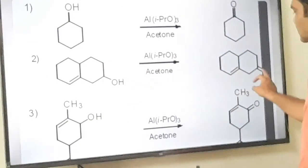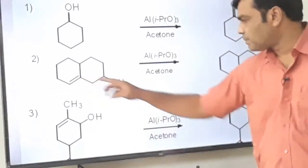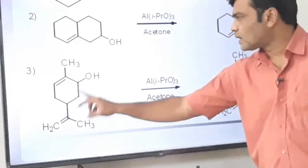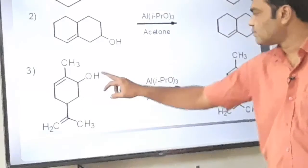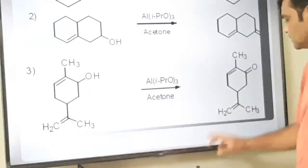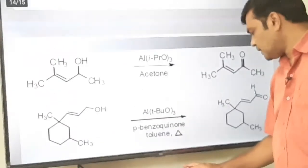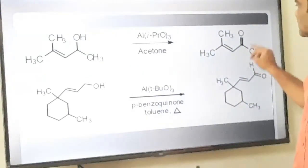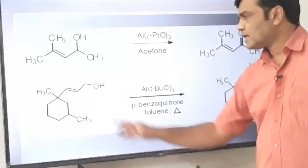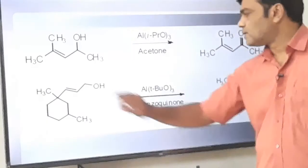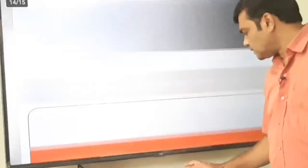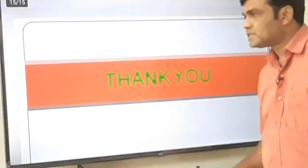All these examples show secondary alcohol is oxidized to ketone without affecting the carbon-carbon double bond. These carbon-carbon double bonds are not affected — only secondary alcohol is oxidized to ketone. Here also, carbon-carbon double bond is not affected and secondary alcohol is converted to ketone. This is all about DMSO-based reagents. Thank you.